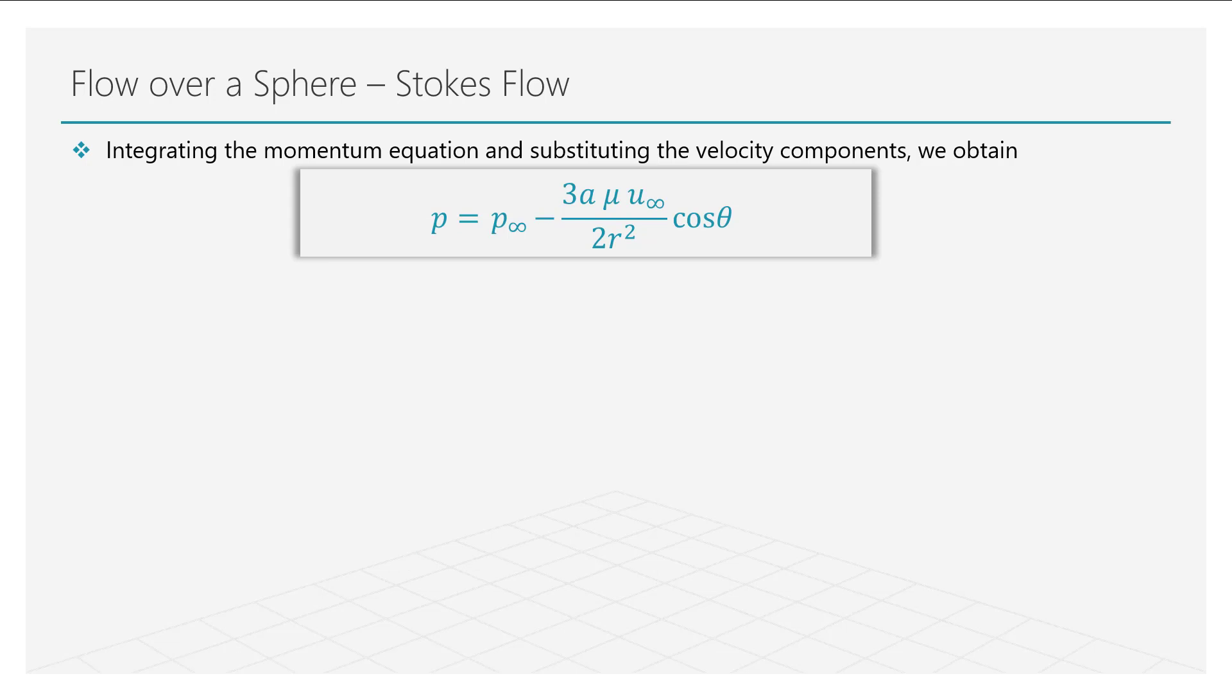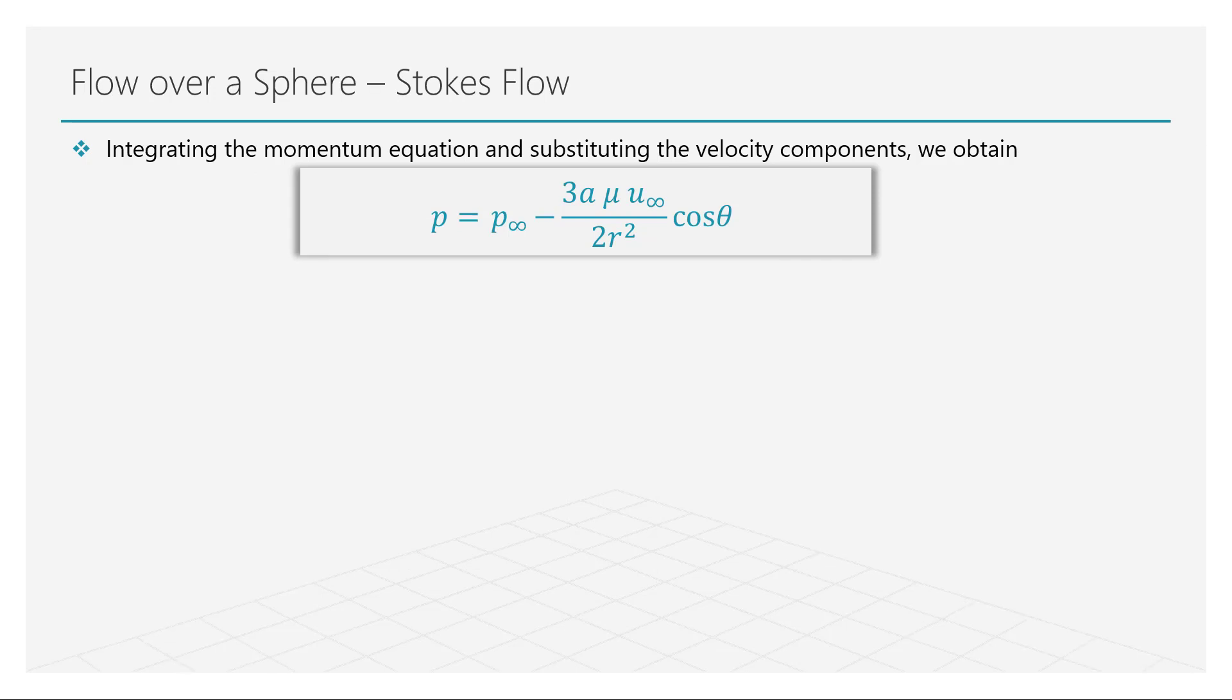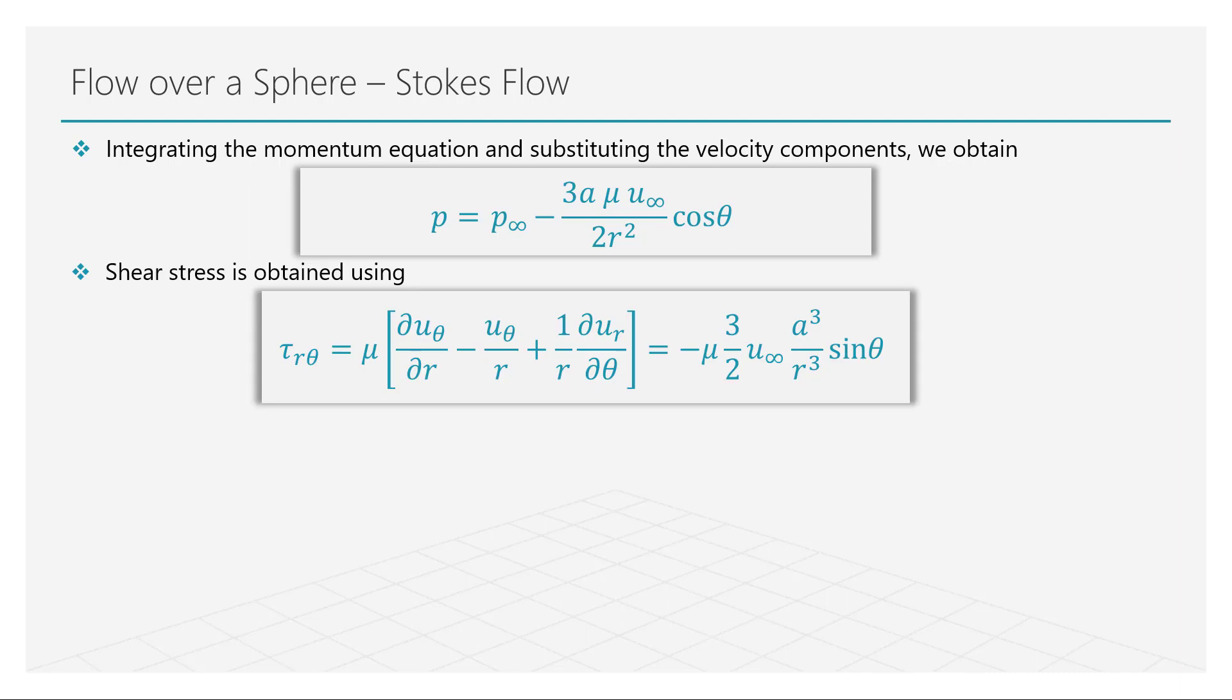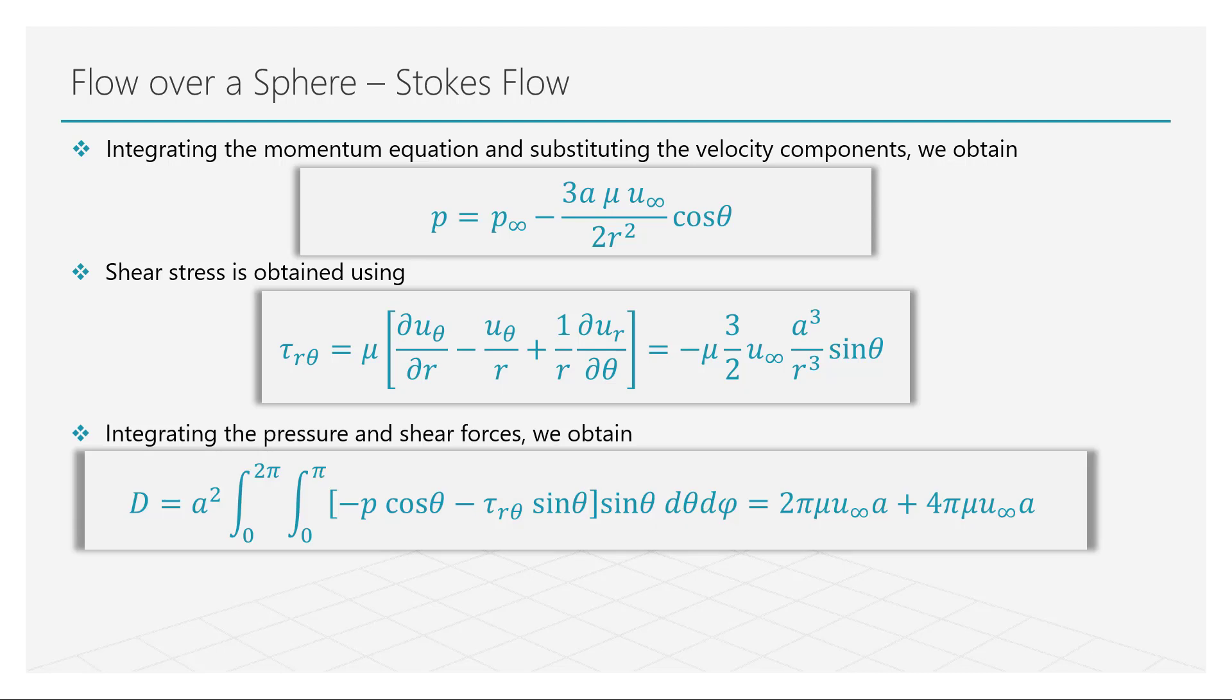Let us now recall the momentum equation for the creeping flow. We obtain a solution for the pressure force distribution on the sphere. Similarly, using the shear force relation written in the spherical coordinate system and substituting for the velocity components, we obtain the solution for the shear stress. By integrating the pressure and shear forces over the surface of the sphere, we obtain the contribution of each of these forces, which when summed up, gives the total drag force on the sphere in creeping flow. This is the famous drag formula proposed by Gabriel Stokes.